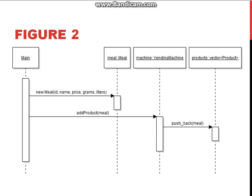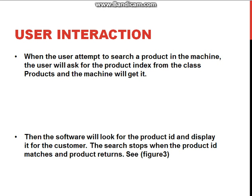When the user attempts to search for a product, they are asked for the product index from the class product and the machine retrieves it. The software then looks for the product ID and displays it for the customer. The search stops when the product ID matches and the product is returned. See Figure 3 for the search process sequence diagram.